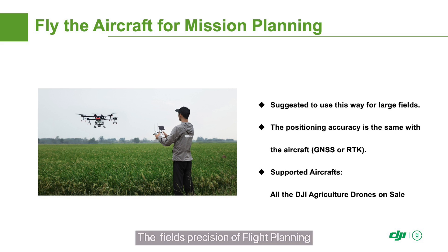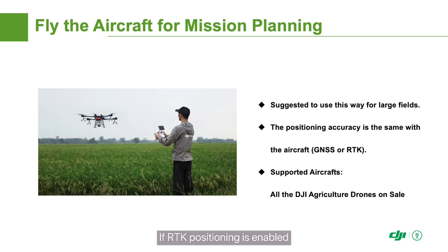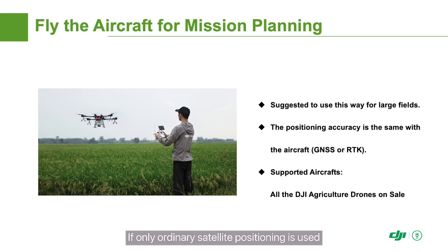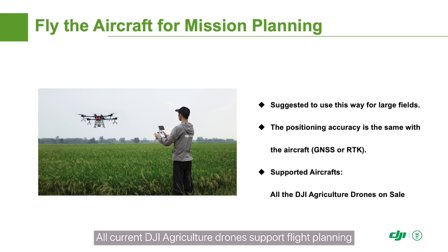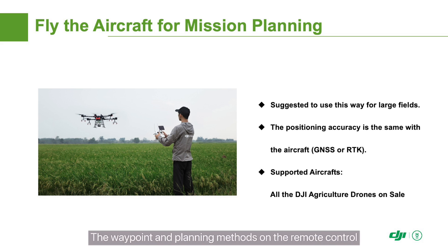The precision of flight planning depends on the positioning precision of the Agris drone. If RTK positioning is enabled, centimeter-level positioning is available. If only ordinary satellite positioning is used, only meter-level positioning can be achieved. All current DJI Agriculture drones support flight planning, and all T-series models support RTK positioning. The waypoint planning methods on the remote control are the same for all the planning methods above.